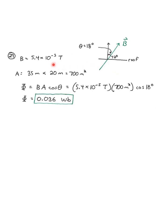The area of the roof is a rectangle, 35 meters by 20 meters, so 700 meters squared. So, we calculate the flux is the magnetic field times the area times the cosine of that 18 degree angle, and we get 0.036 V.